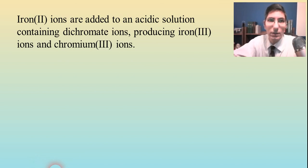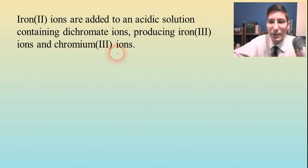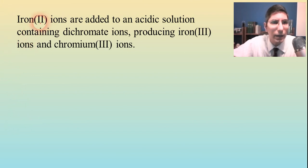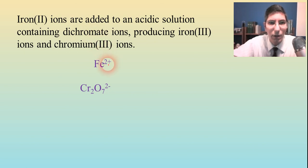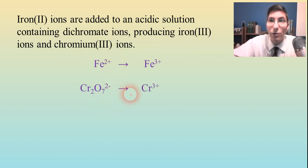For example, let's try this example on the board here. We have iron(II) ions added to an acidic solution containing dichromate ions, producing iron(III) ions and chromium(III) ions. So that seems like a lot going on. What you want to do first is write down the reactants. So we have iron(II) ions reacting with dichromate — those are the reactants. The products are iron(III), which is obviously the product of the iron(II), and chromium(III) is the product of the dichromate. We talked about that in the last video — how you need to know that.